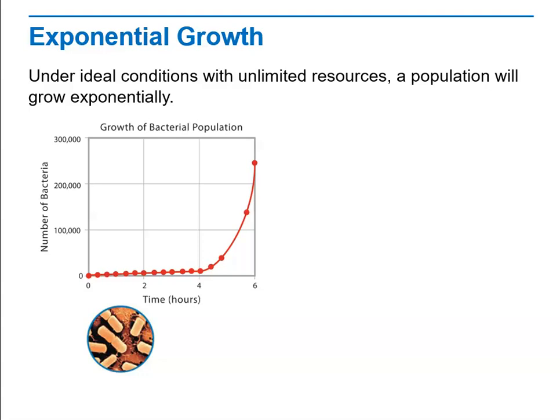Think about a hypothetical experiment with a single bacterium that divides to produce two cells every 20 minutes. We supply it with ideal conditions — plenty of food, waste is removed so it doesn't poison itself, and there's nothing to kill it or limit its growth. If we watch it, after 20 minutes it divides to produce two bacteria. After another 20 minutes, those two divide to produce four cells. After an hour, those four produce eight cells.